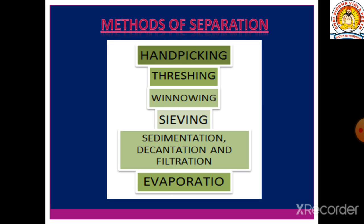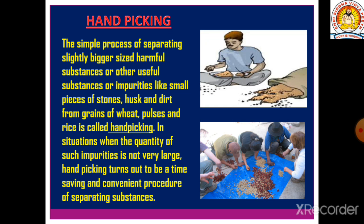Now we are going to study the methods of separation. We have learned that separation is quite useful and important. The methods are: first, hand-picking; second, threshing; third, winnowing; fourth, sieving; fifth, sedimentation, decantation and filtration; and sixth, evaporation — spelling: E-V-A-P-O-R-A-T-I-O-N.